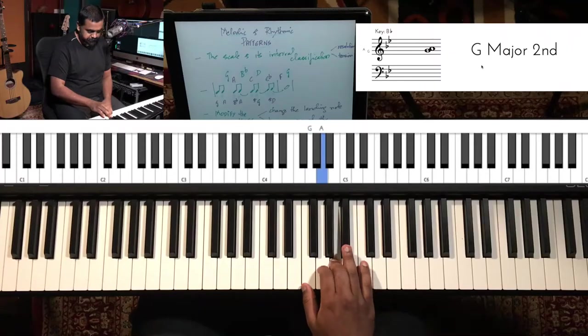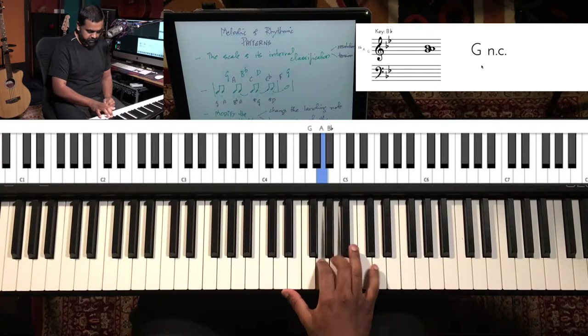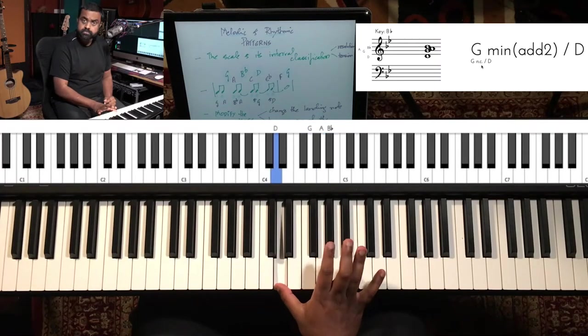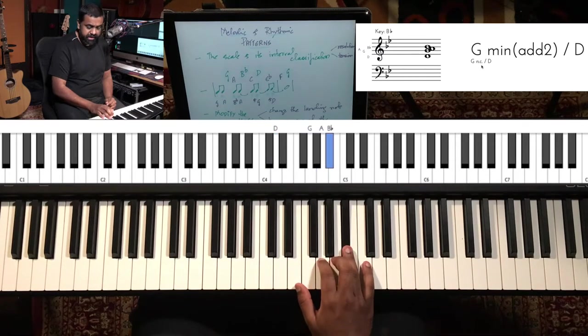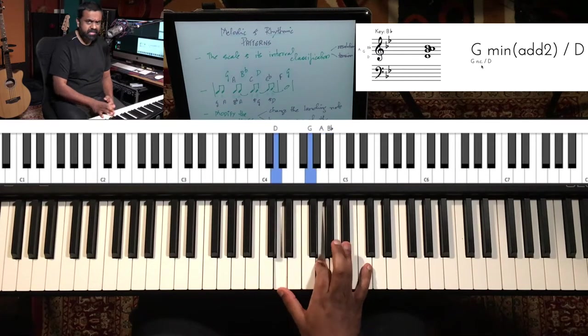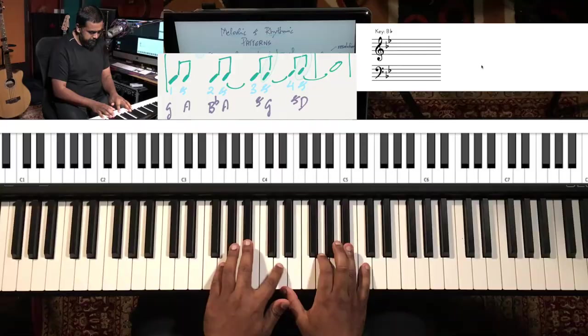For this lesson, I've taken a melody line which is G, A, Bb, A, G, D — on the Bb major scale with 2 flats. And the chord progression is G minor, then Eb major.